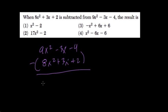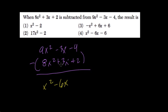9x squared minus 8x squared — that's 1x squared. Negative 3x minus 3x — that's negative 6x. Negative 4 minus 2... excuse me, negative 4 minus 2 is negative 6.